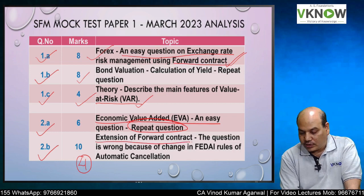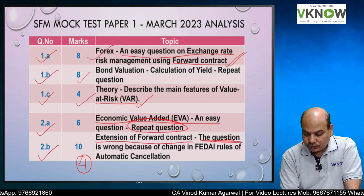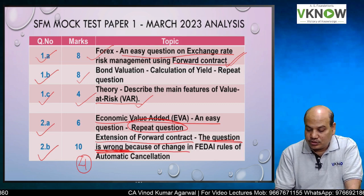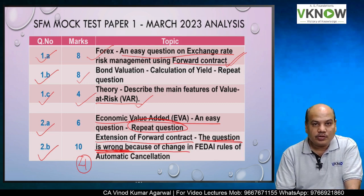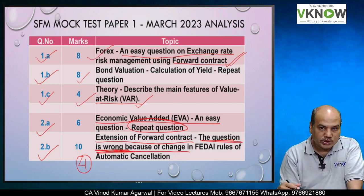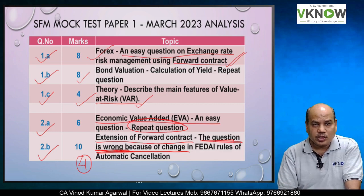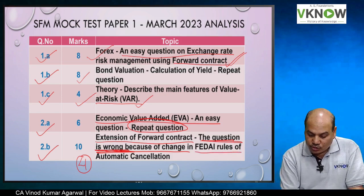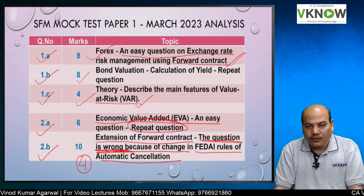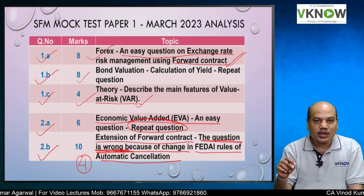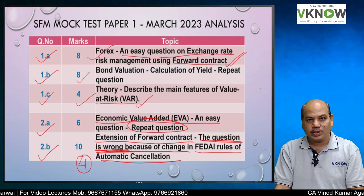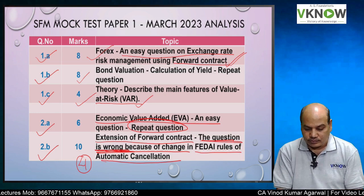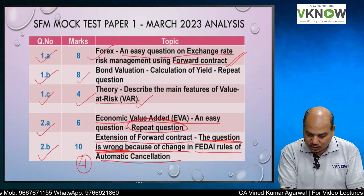Question 2B was on the extension of a forward contract. Please note it in light of the amendment made by FEDAI — there was an amendment in FEDAI rules because of which the question has become wrong. The Institute has copy-pasted an old question, but last year there was an amendment, so the question needs to be updated but the Institute has not done so. This question is based on the automatic cancellation rule: if a customer does not turn up on the maturity date of a forward contract, the contract will be cancelled after waiting for 3 days. But the exchange rate after those 3 days was not given. Question 2C was a theory question for 4 marks.